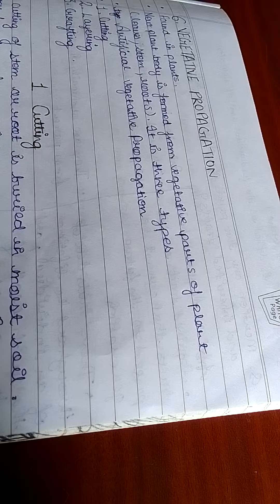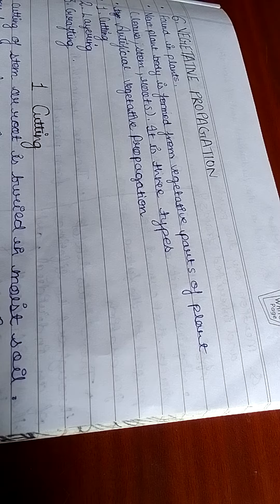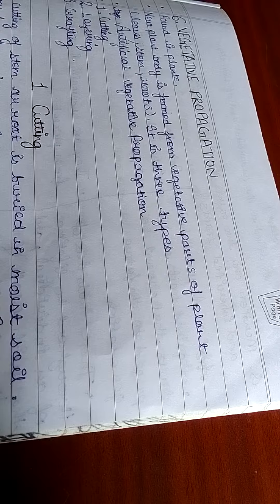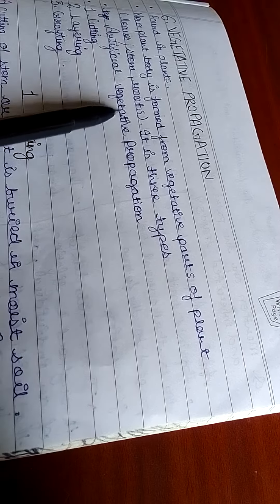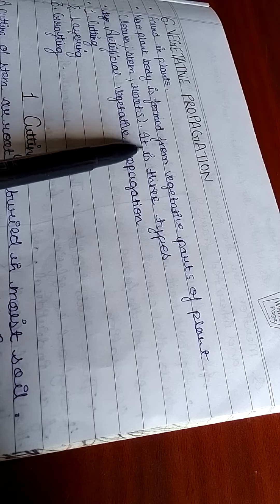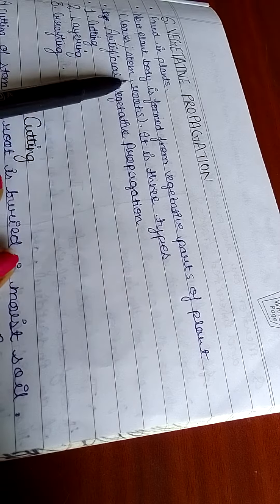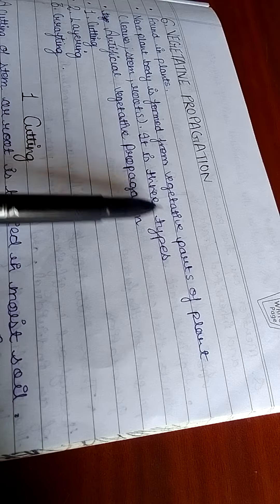Today we will discuss Class 10 chapter: how do organisms reproduce. Let's get started. Vegetative propagation is found in plants where new plant bodies are formed from vegetative parts of the plant - leaves, stem, and roots. It has three types.